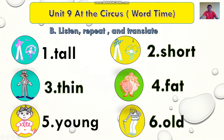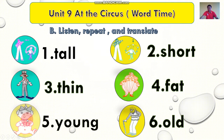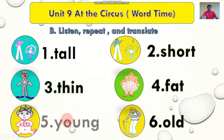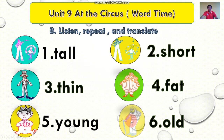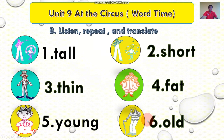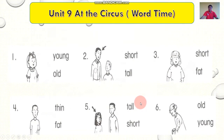Number four: fat. Fat. Pratha, Thuat. Yes. Number five: young. Young. Pratha, Kming. Number six: old. Old. Old. Pratha, Jack. Hey, thin. You. Okay. You all.